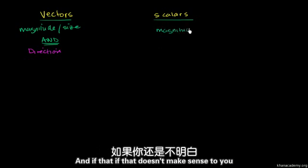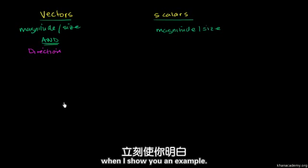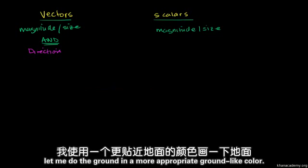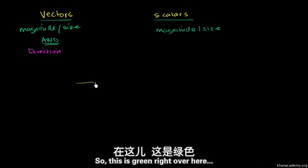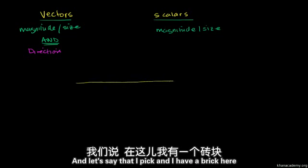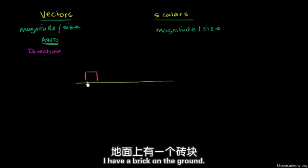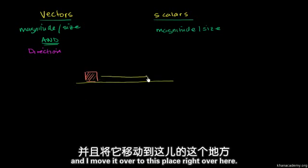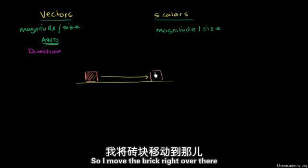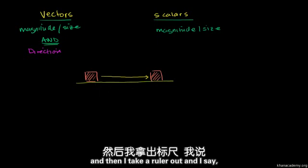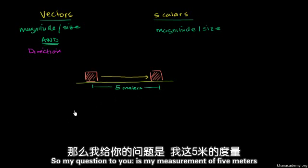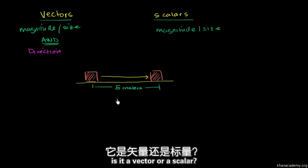If that doesn't make sense, it will hopefully make sense in a second when I show you an example. Let's say that's the ground right there — let me do the ground in a more appropriate ground-like color, so this is green right over here. Let's say I have a brick here, and I have moved the brick over to this place right over here. I take a ruler out and say I've moved the brick five meters. So my question to you is: is my measurement of five meters a vector or a scalar?